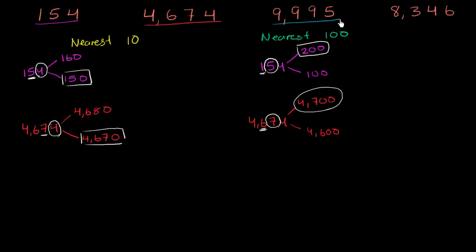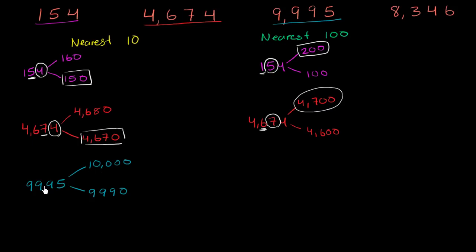Now let's tackle 9,995. Always try to pause the video to do this on your own. The multiple of 10 below this is 9,990, and if you increase this by 10, you actually get to 10,000. So the multiple of 10 right above 9,995 is 10,000. It's also a multiple of 100, 1,000, and 10,000 — yes, it's all of those. You just add a little bit to get there. If we're rounding to the nearest 10, we look at the ones place. The ones place is 5 or greater, so we round up to 10,000.